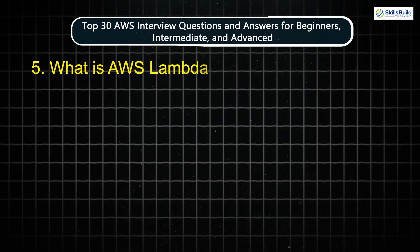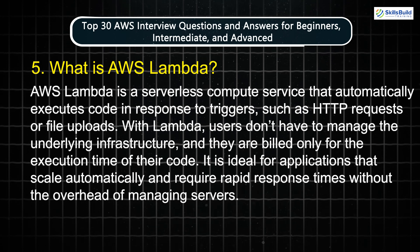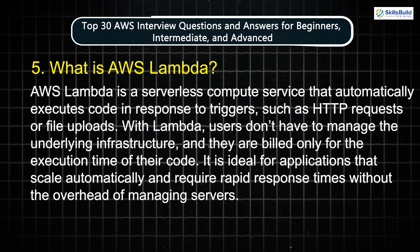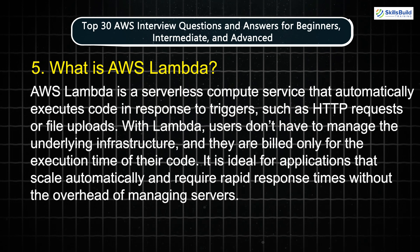Question 5: What is AWS Lambda? AWS Lambda is a serverless compute service that automatically executes code in response to triggers, such as HTTP requests or file uploads. With Lambda, users don't have to manage the underlying infrastructure, and they are billed only for the execution time of their code. It is ideal for applications that scale automatically and require rapid response times without the overhead of managing servers.